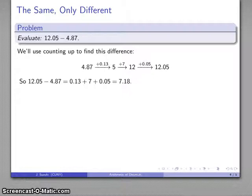And this is actually a fairly standard cashier's trick because I have 4.87, 13 cents gets me to 5, 7 dollars gets me to 12, 5 more cents gets me to 12.05. And so here's a fairly standard cashier's trick for evaluating such a difference, 7.18.